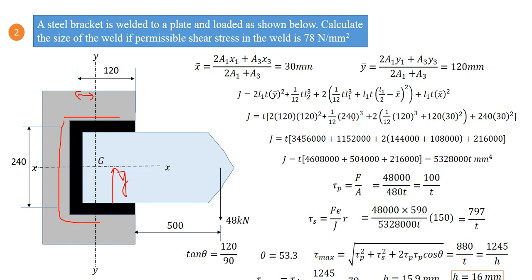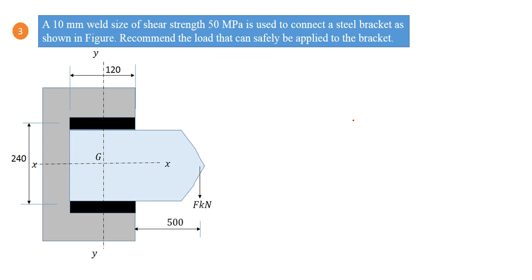Next problem: a 10 mm weld size of shear strength 50 MPa is used to connect a steel bracket as shown in the figure. Recommend the load that can safely be applied to the bracket.